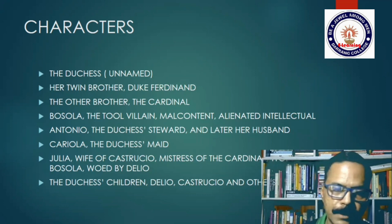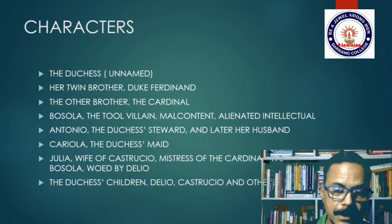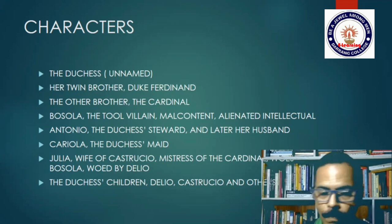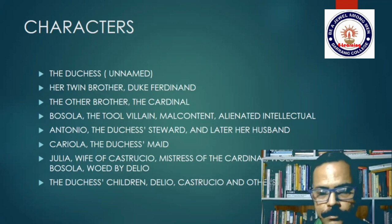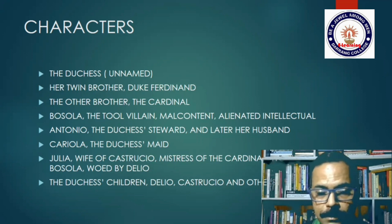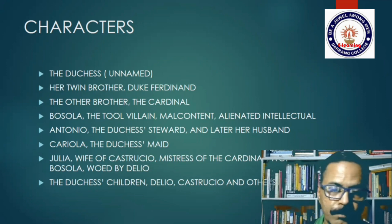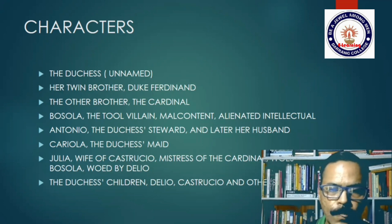Then there is Antonio, the steward of the Duchess and later her husband. There is Cariola, the Duchess's maid, who is the witness to the private marriage of the Duchess and Antonio — a marriage that takes place in hiding, avoiding the revengeful brothers. Then there is Julia, wife of Castruccio and mistress of the Cardinal, who is also desired by Delio. Julia is an important character and serves as a foil to the Duchess. There are also the Duchess's children, Delio, Castruccio, and other characters.